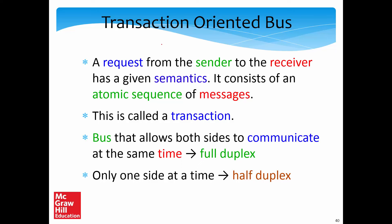Let us look at what is a transaction-oriented bus. It is a request from the sender to the receiver with a certain semantics — a higher level meaning. A transaction can be between any pair of nodes: the sender sends something, the receiver sends something back, then the sender sends something again. This kind of message-to-and-fro exchange is called a transaction. A bus that allows both sides — sender and receiver — to communicate at the same time is called a full duplex bus.